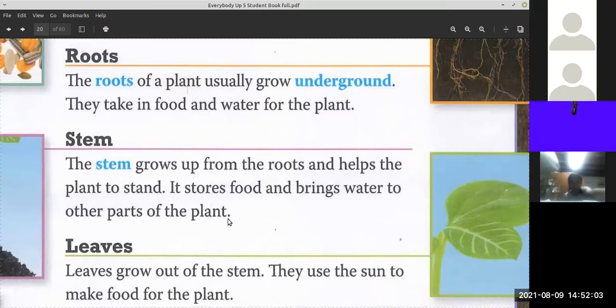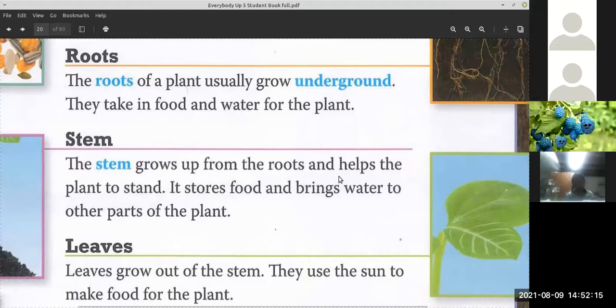Okay, for us it's very important we not lose the endings from the words. The endings means, as example, mostly when you read, you read like the stem grow up from the root and help the plant to stand. You lose me the endings. As example, you have there the stem grows, the stem grows, grows up from the roots and helps the plants to stand. It stores food and brings water to other parts of the plants. Please not forget me the endings, not cut them away because it's important.